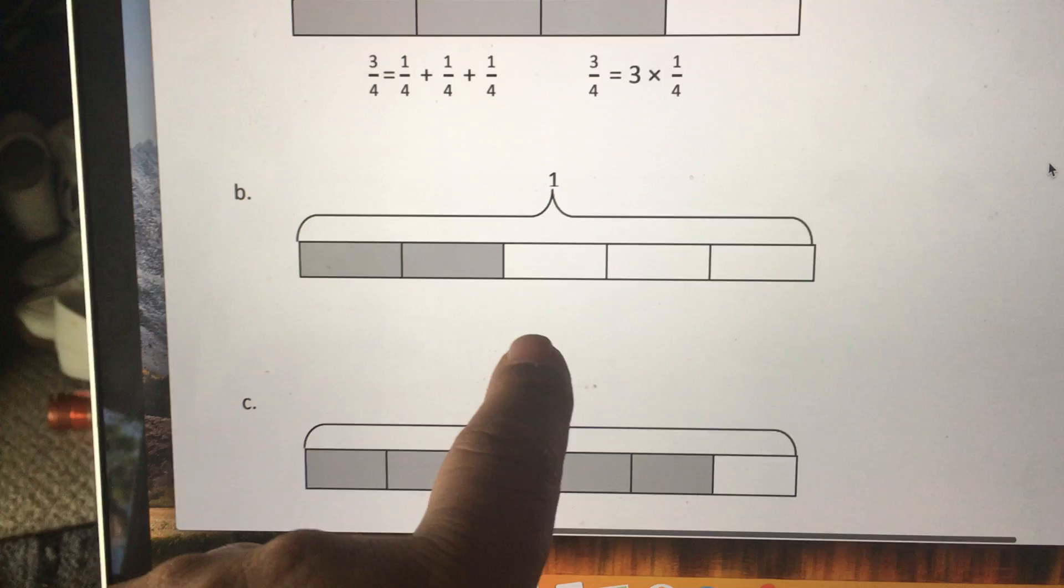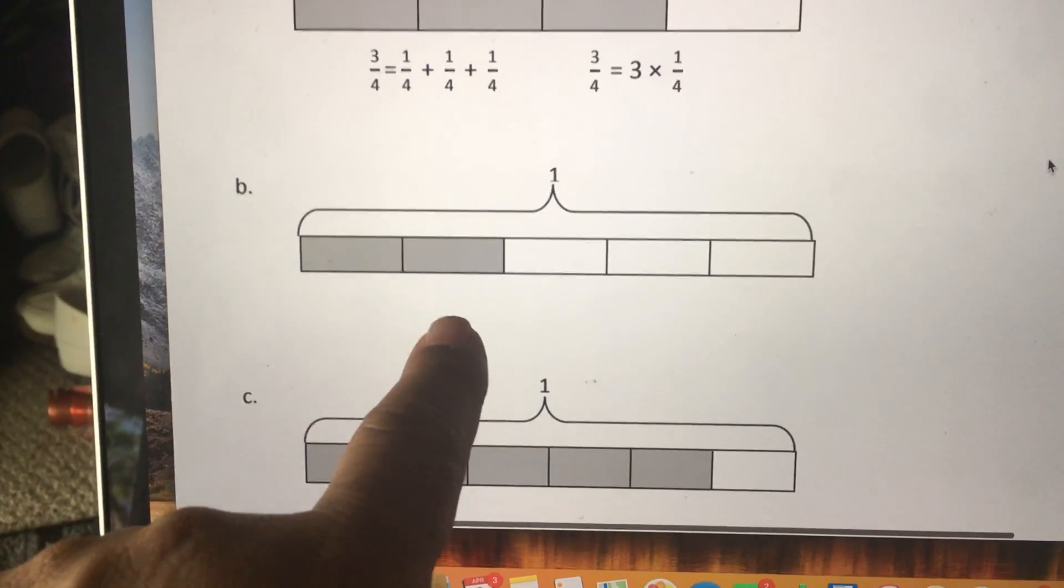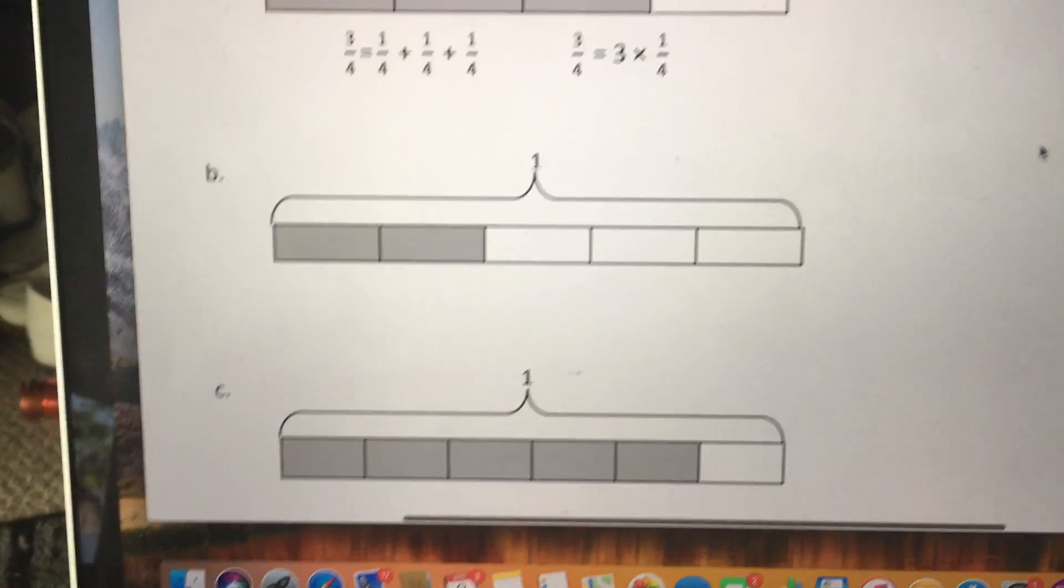And if we were writing the multiplication sentence, then this would be two times one-fifth. All right.